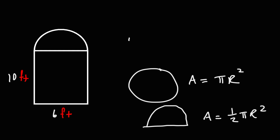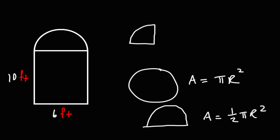Likewise, for a quarter circle, the area is going to be one-fourth of a full circle, so it's one-fourth pi r squared.